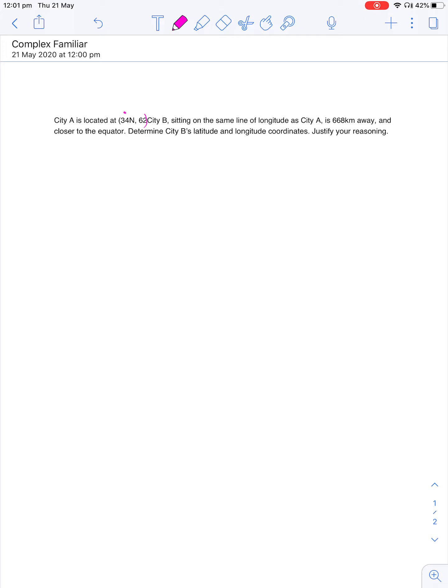And then City B, sitting on the same line of longitude as City A, is 668 kilometers away, which is also closer to the equator. Determine City B's latitude and longitude coordinates. So I'm just going to quickly draw my coordinates. This is my first one, this is City A.